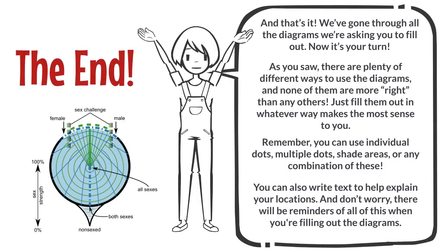We've gone through all the diagrams we're asking you to fill out. Now it's your turn. As you saw, there are plenty of different ways to use the diagrams, and none of them are more right than any others. Just fill them out in whatever way makes the most sense to you. Remember, you can use individual dots, multiple dots, shade areas, or any combination of these. You can also write text to help explain your locations. And don't worry, there will be reminders of all of this when you're filling out the diagrams.